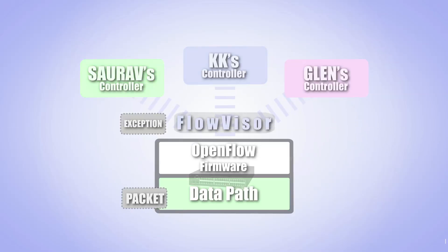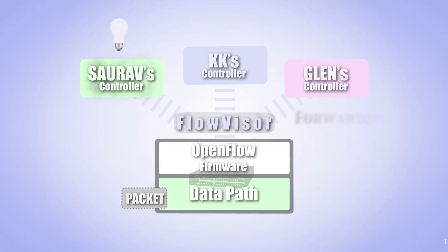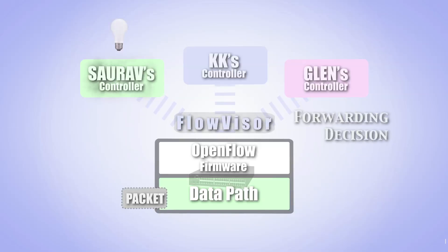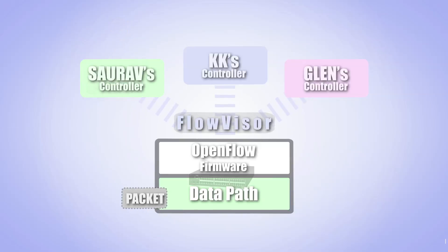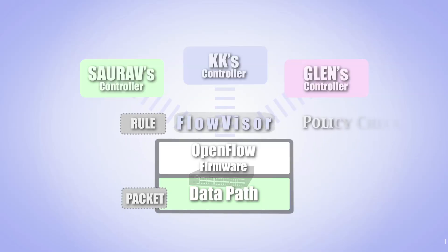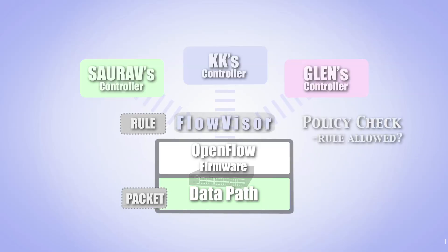The message is then forwarded to the appropriate controller, which makes some forwarding decision — i.e., send all packets that look like this down to port number 5 — and then sends a corresponding new forwarding rule back down to the switch. The FlowVisor again intercepts the rule and does another policy check, this time to ensure that the new rule does not infringe on the traffic from other slices.